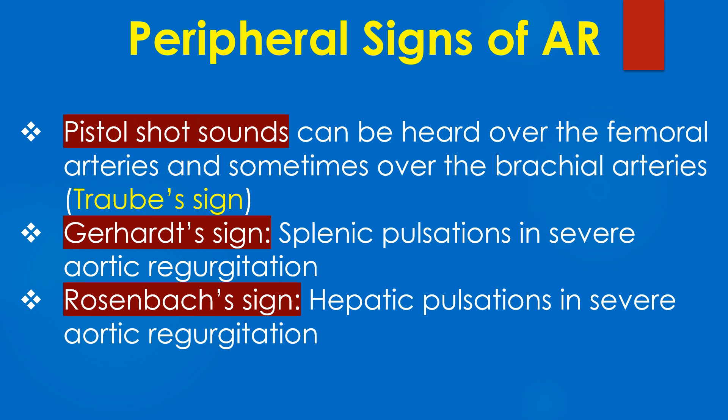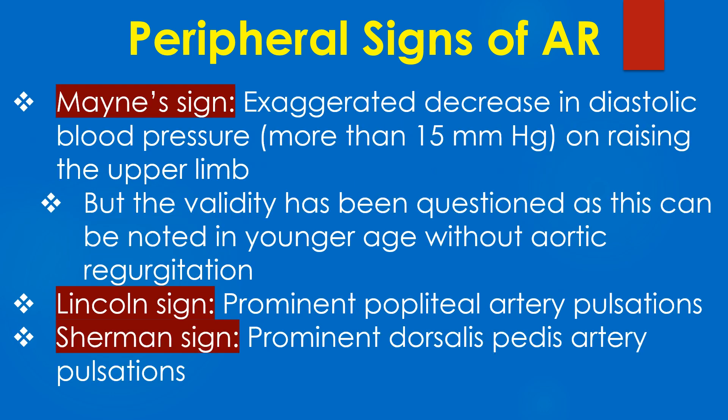Gerhardt sign refers to splenic pulsations in severe aortic regurgitation. Rosenbach sign refers to hepatic pulsations in severe aortic regurgitation. Mind sign is an exaggerated decrease in diastolic blood pressure of more than 15 mmHg on raising the upper limb, though its validity has been questioned as it can be noted in younger individuals without aortic regurgitation.